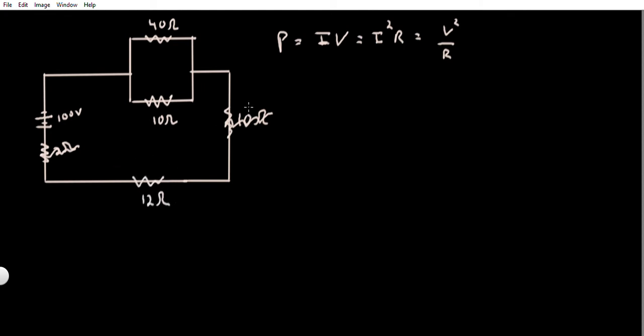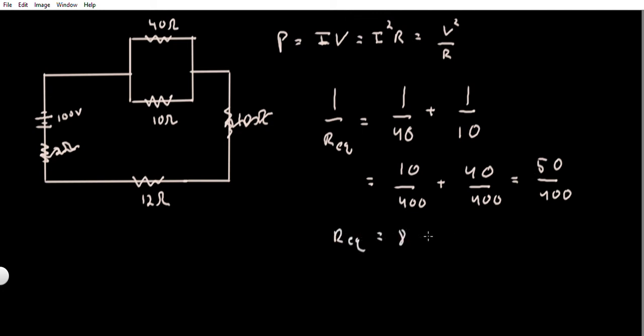Next we're going to find the equivalent resistance of this part, so 1 over R_eq equals 1 over 40 plus 1 over 10. We can get common denominators - we'll get 400 - that'd be 10 over 400 plus 40 over 400, which is 50 over 400. So that means R_eq is 400 divided by 50, or 40 over 5. So R_eq must be 8 ohms for this part of the circuit.